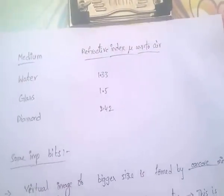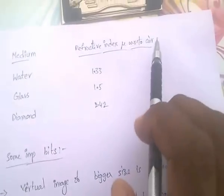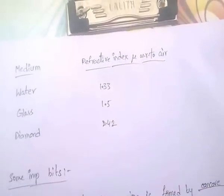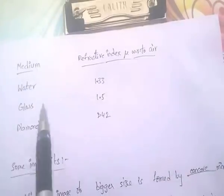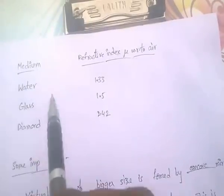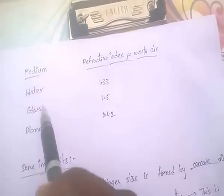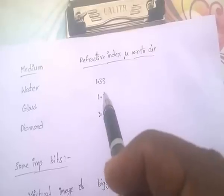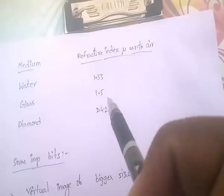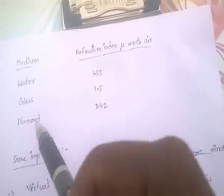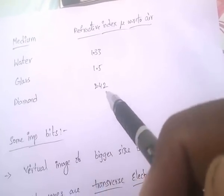Medium and their refractive index with respect to air: water has refractive index 1.33, glass is 1.5, and diamond is 2.42. Diamond has a high refractive index of 2.42.